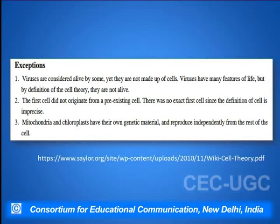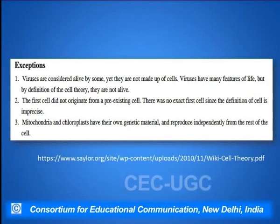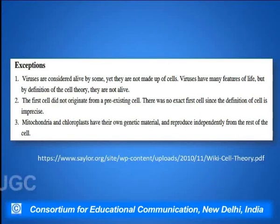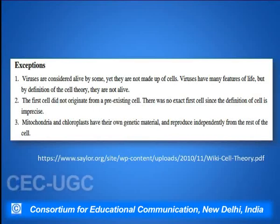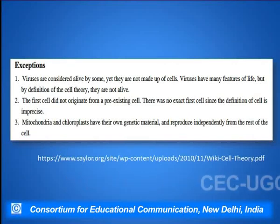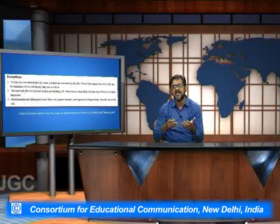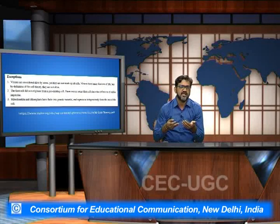There are certain exceptions to the cell theory. The first exception is viruses — many viruses have been featured as lifeless because they do not have any cell or are said to not be alive. The first cell did not arise from any pre-existing cells, which is also an exception to the cell theory. Thirdly, the mitochondria and the chloroplast are also exceptions because they have their own genetic material and reproduce individually from the rest of the cells.